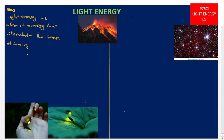We are able to see things around us because they reflect light into our eyes. So, we define light as a form of energy that stimulates the sense of seeing. Now let us look at the sources of light.